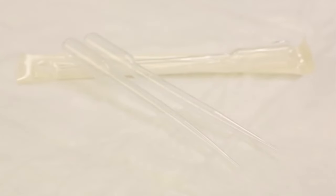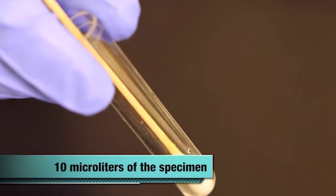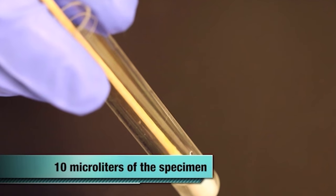To begin the procedure, use a sterile pipette to remove one drop or 10 microliters of the specimen from the collection tube. Place the drop on a sterile labeled microscope slide. Carefully place a cover slip over the drop of the specimen on the slide.